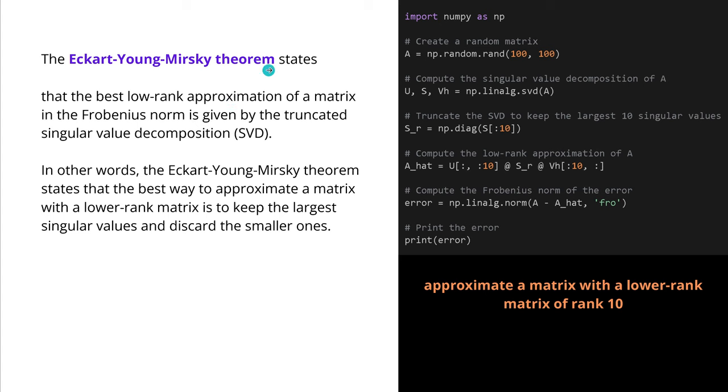But we know now that this theorem states that the best low-rank approximation of a matrix in the Frobenius norm is given by the truncated singular value decomposition. In other words, to be simple, the Eckart-Young-Mirsky theorem states that the best way to approximate a matrix with a lower rank matrix is just simple, to keep the larger singular values and discard the smaller one. Easy, simple, peasy.